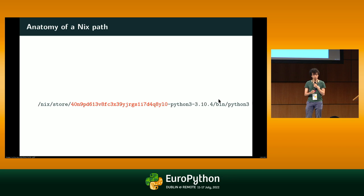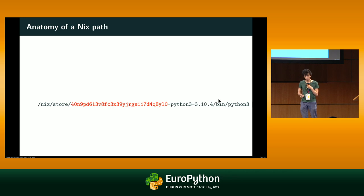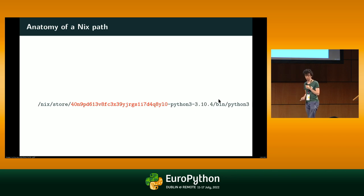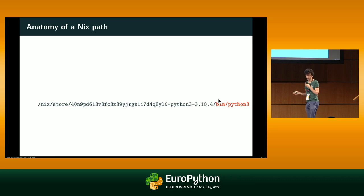A nice property of Nix is that the cryptographic hash uniquely identifies your package. Derivations are either input-addressed — meaning your package is a function of its inputs, so if NumPy changes and you depend on NumPy your package changes — or content-addressed, meaning if NumPy changes but your result doesn't change due to a minor API bump, the hash won't change. This means you never build software twice for no reason, and it makes it trivial to cache derivations and provide them to everyone.